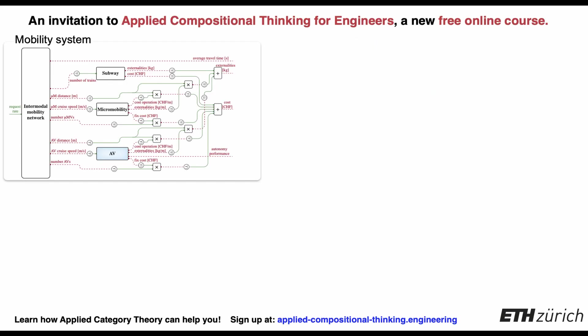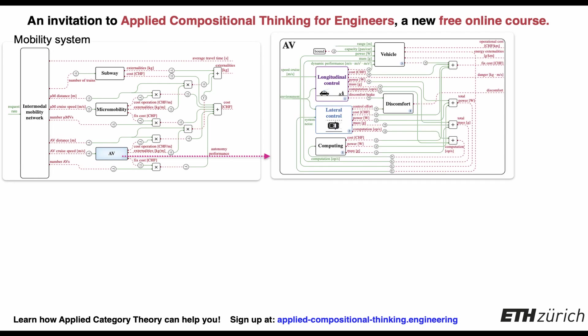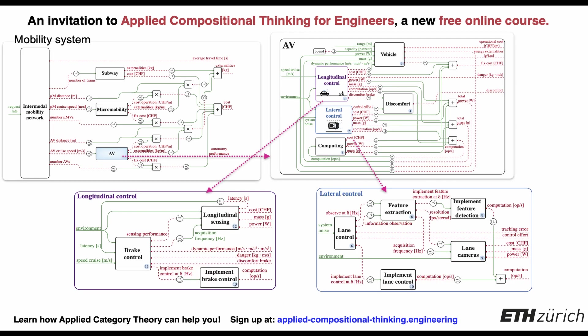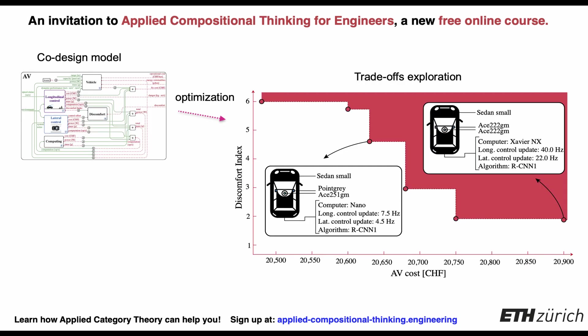A compositional approach helps in formalizing different interconnected abstraction levels. For instance, in the case of an autonomous vehicle we can look at the design of the vehicle components as well as a mobility system in which fleets of such vehicles service customers together with public transportation and micromobility options. This framework can be used to both model and solve various design questions at different abstraction levels.